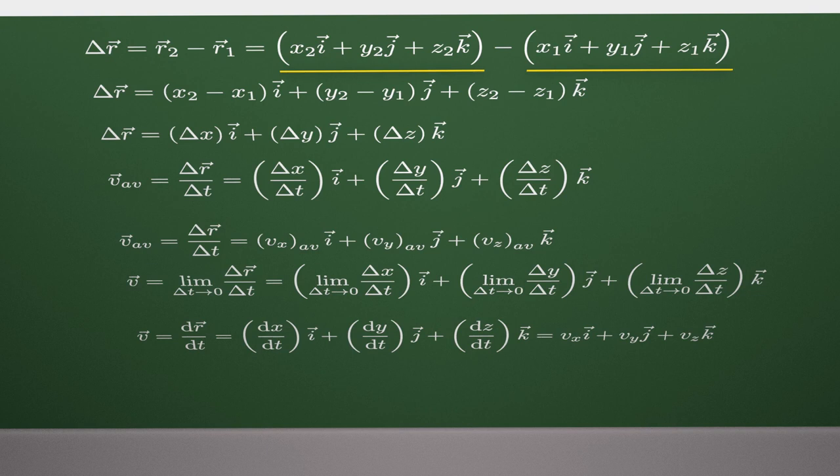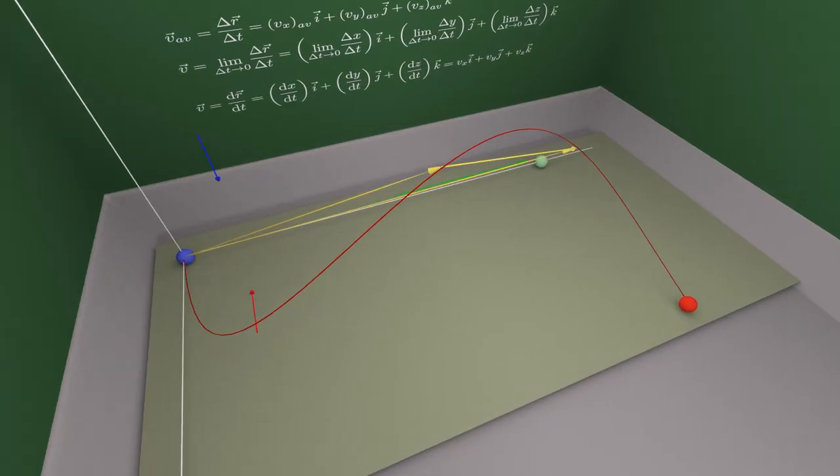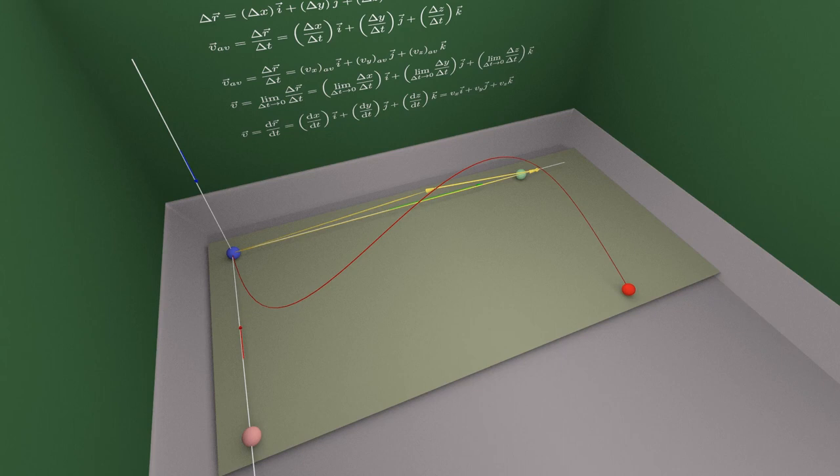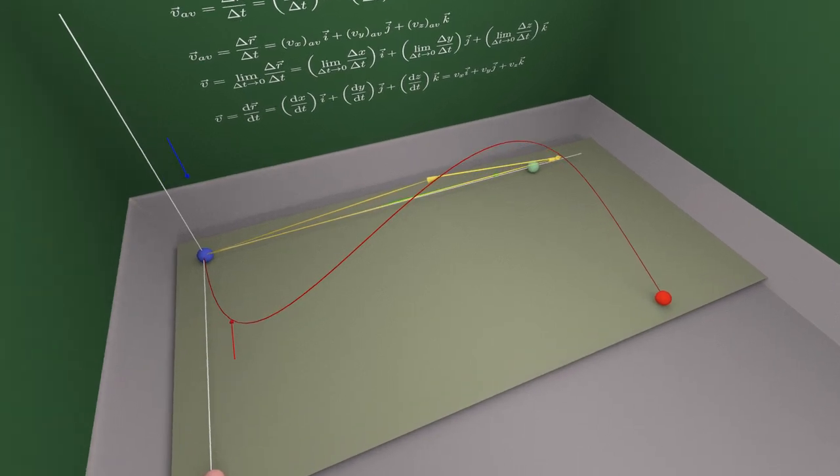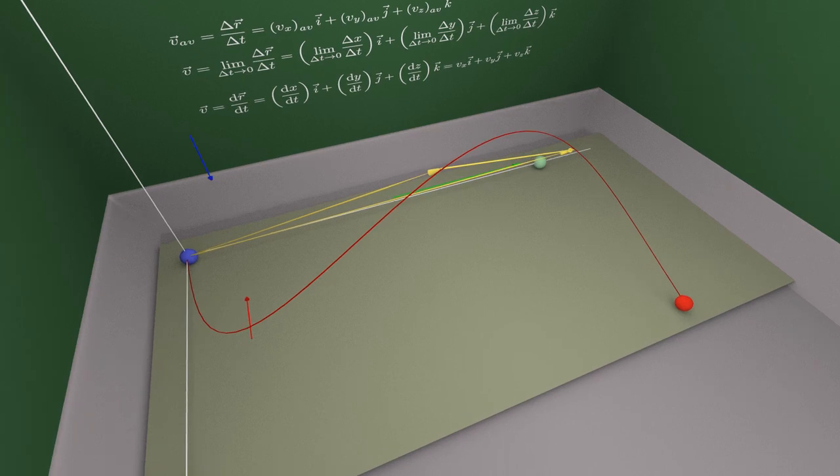So, if we want to determine displacement in space, we need to know three displacements on the observed axis. We see that the vector sum of these three displacements is equal to the displacements in space.